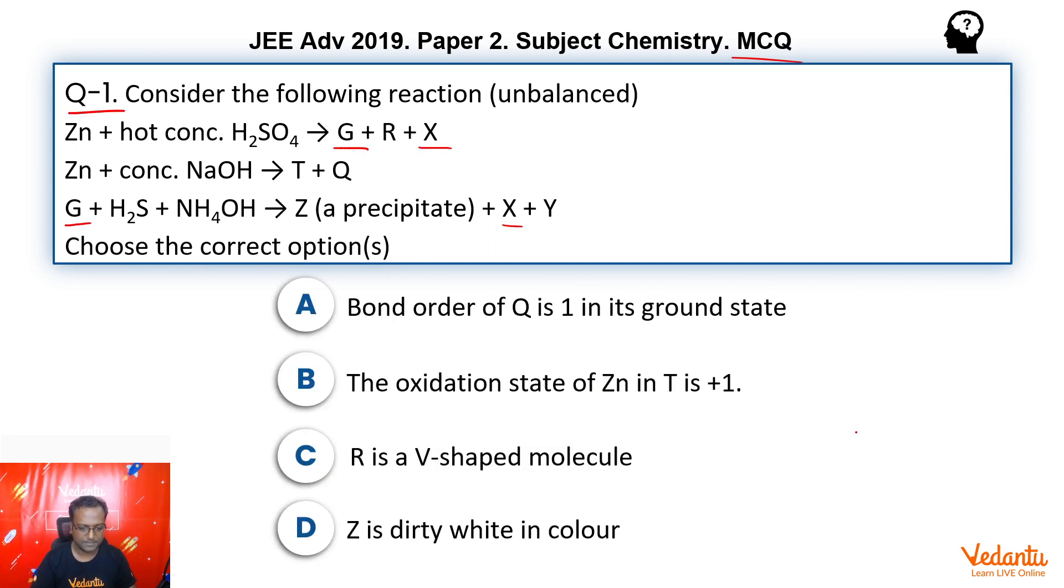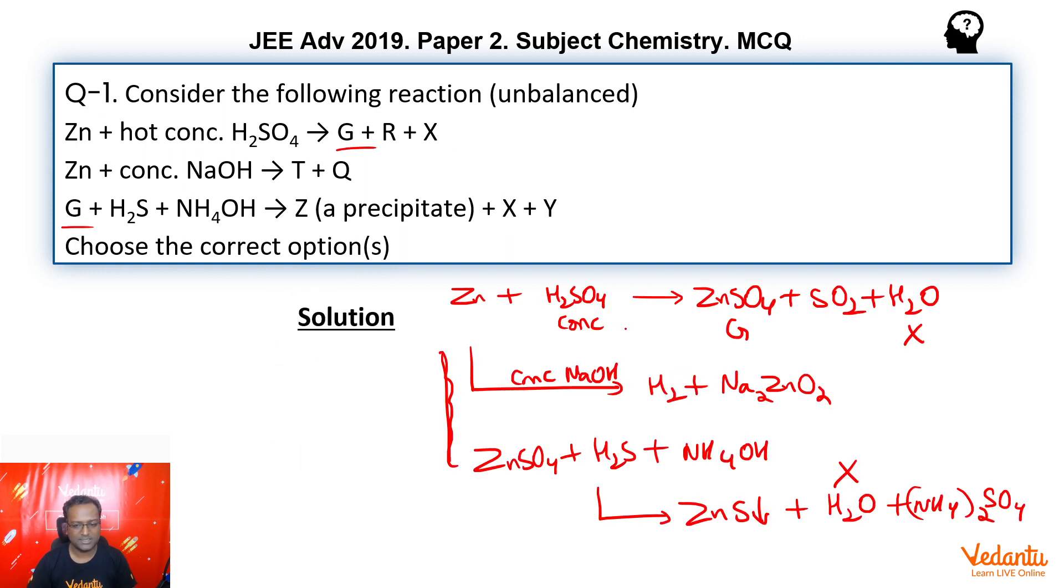Now let's go back to our options. Bond order of Q is 1 in the ground state. Now if we talk about the second reaction, one was Na2ZnO2 and the other is hydrogen.